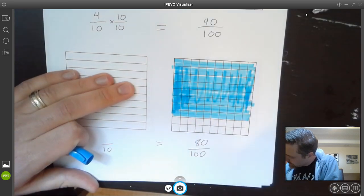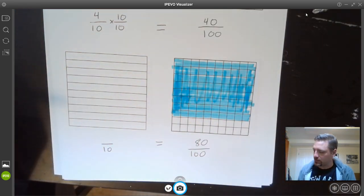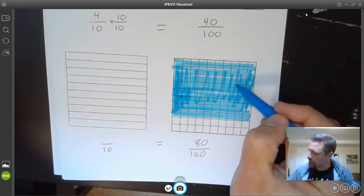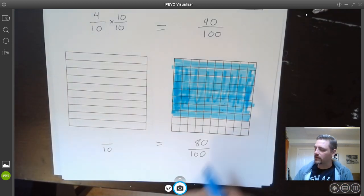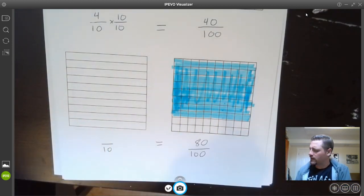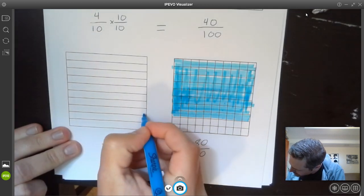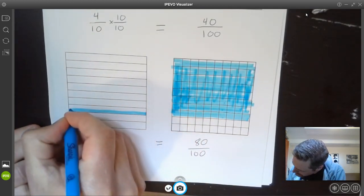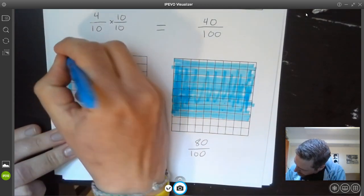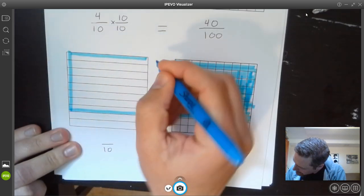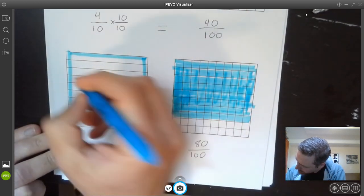So you can see that I filled in 80 boxes. 10, 20, 30, 40, 50, 60, 70, 80 boxes. And if I go over here to this side and do the same amount, I'm going to go from here to here and all the way up here. I'm going to fill this whole area.